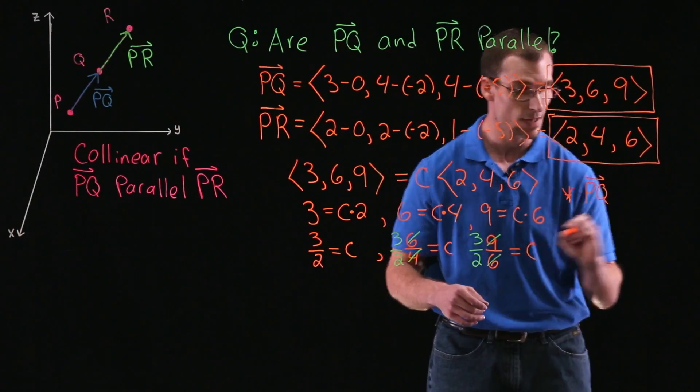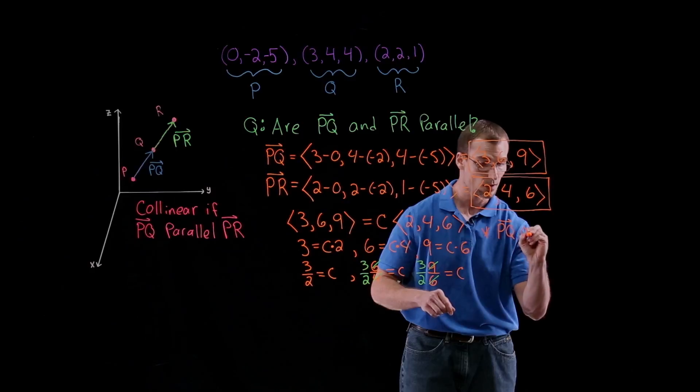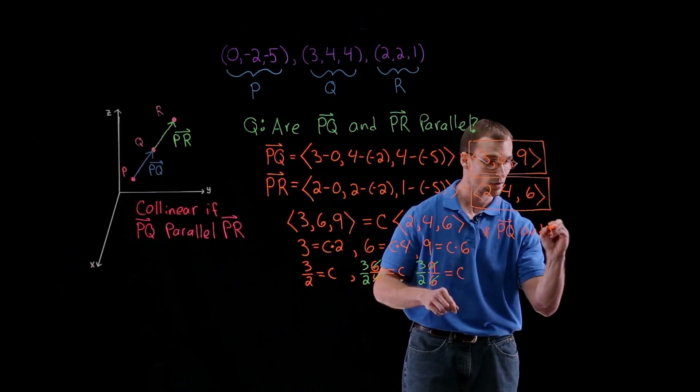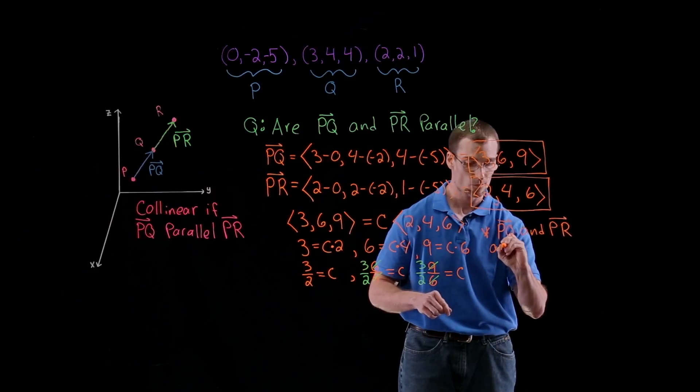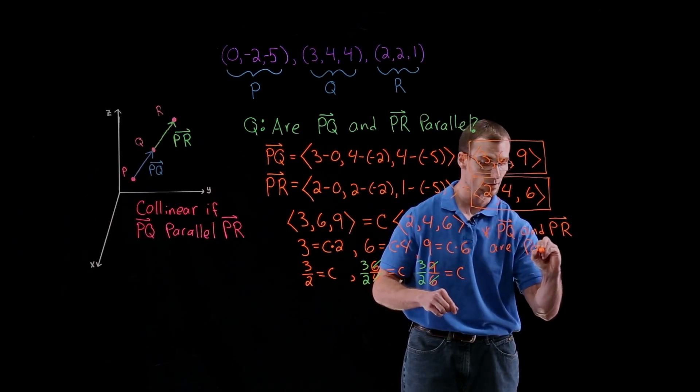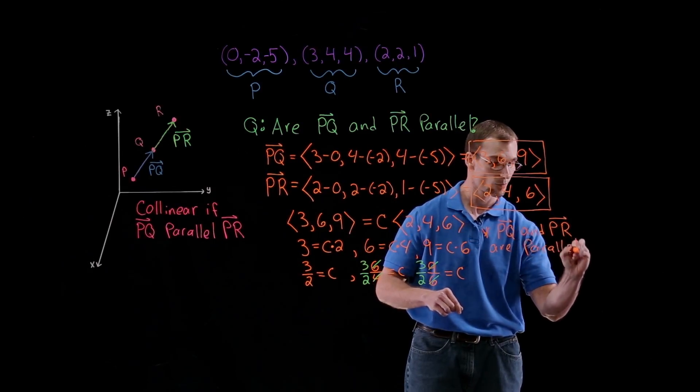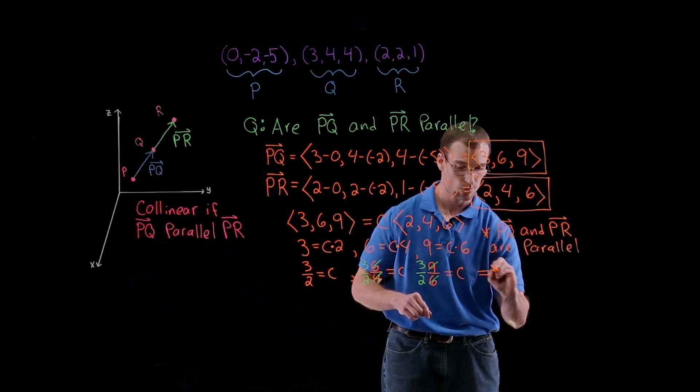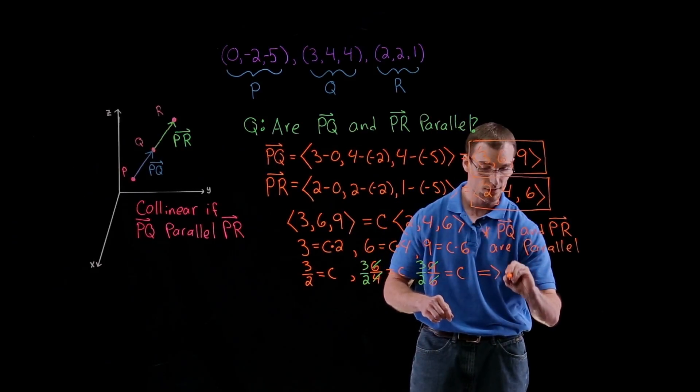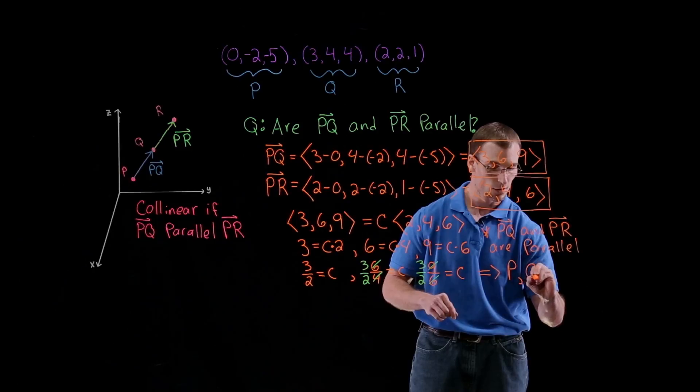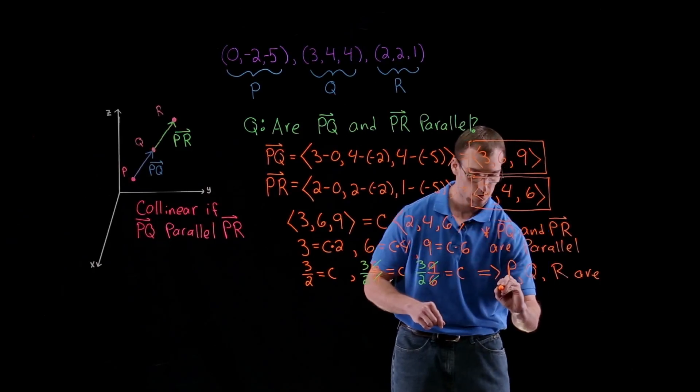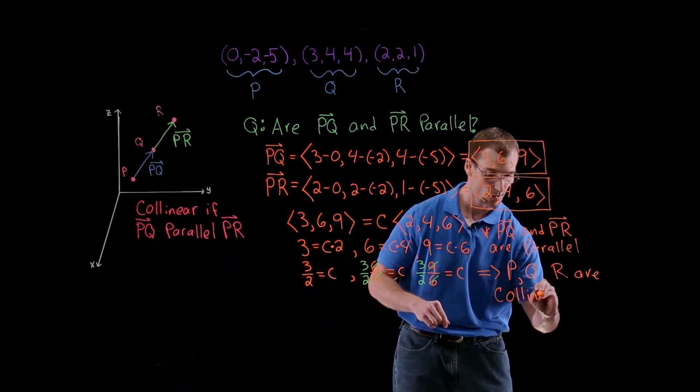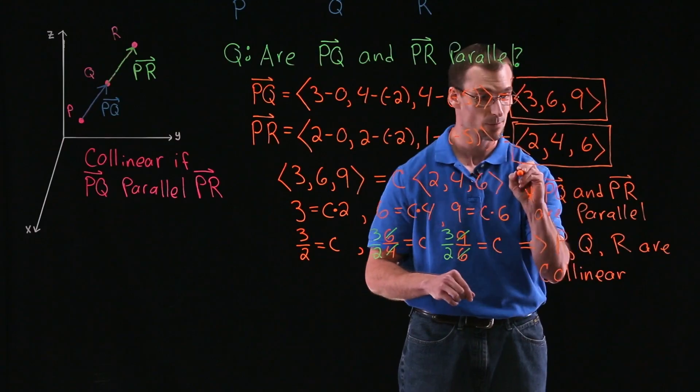So let's write this down. So the vector PQ and PR are parallel. So that implies that our points P, Q, and R are collinear.